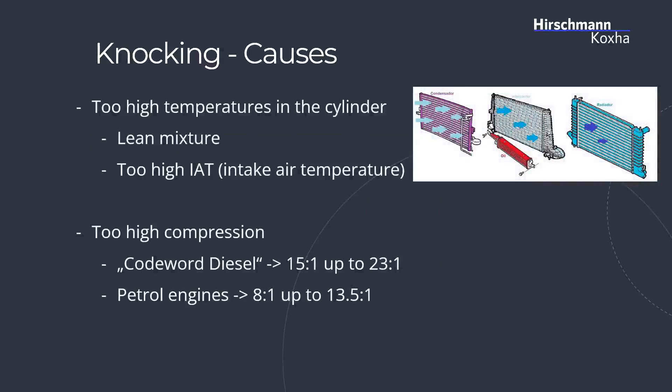Other causes can be too high temperatures in the cylinder, caused by a too lean mixture or by a too high intake air temperature. On the right you're going to see the cooler layout of a 9.5. We have a condenser in front of the intercooler and then the radiator — so the intercooler, which is responsible for cooling our intake air, is sandwiched between those two. This is why the 9.5 often runs into problems during summer. Another mechanical cause is too high compression. A diesel engine has a compression ratio of 15:1 up to 23:1, while for a petrol engine, 8:1 up to 13.5:1 is the most commonly used ratio.